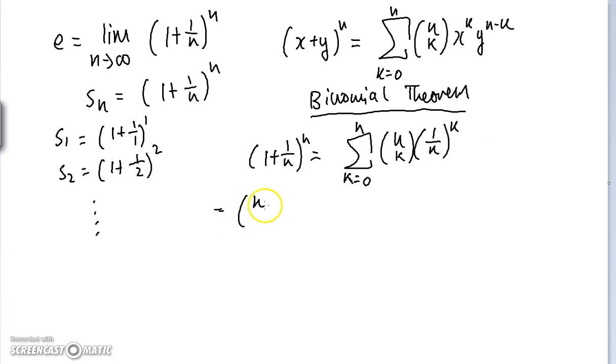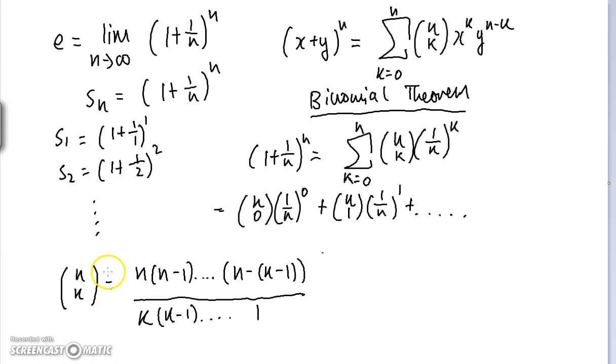If we write that out, it looks pretty neat. It's just N choose 0, 1 over N to the power 0, plus N choose 1, 1 over N to the power 1, et cetera. And obviously we're interested in the limit as N approaches infinity of this series.